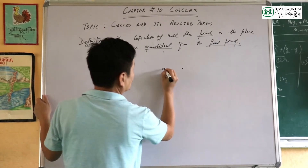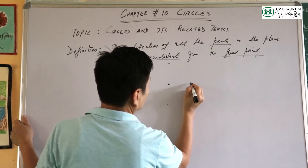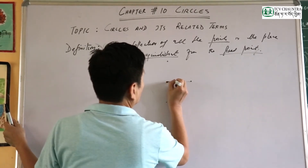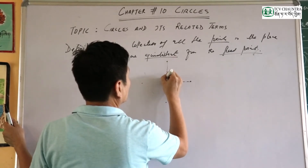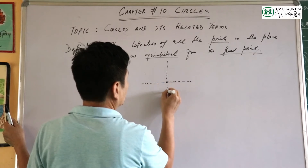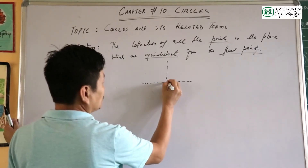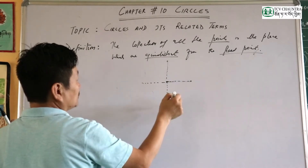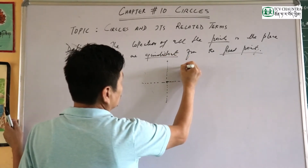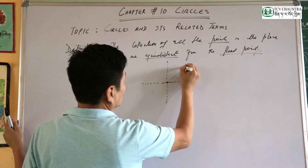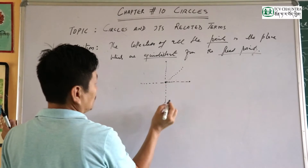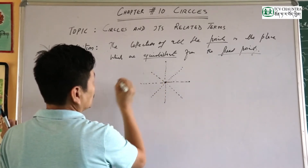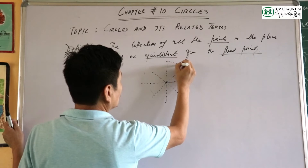Any questions? We'll fix the point. This is one example — the collection of all the points at 5cm, 5cm, 5cm, 5cm, and 0.5cm from the fixed center point.